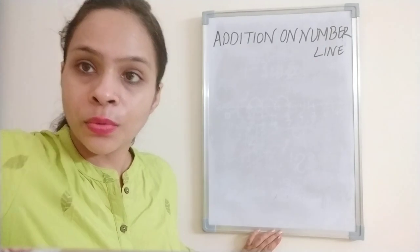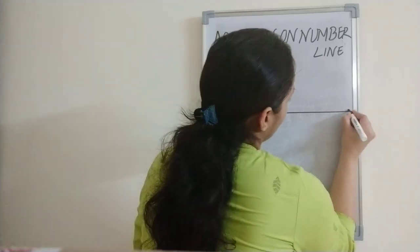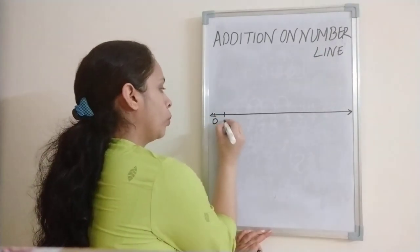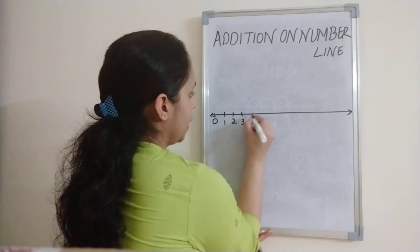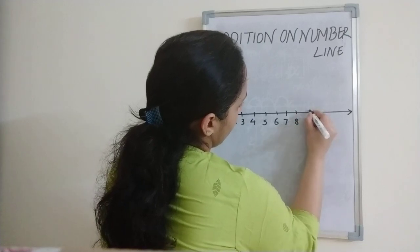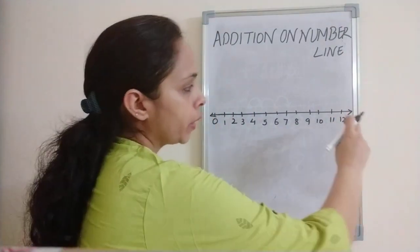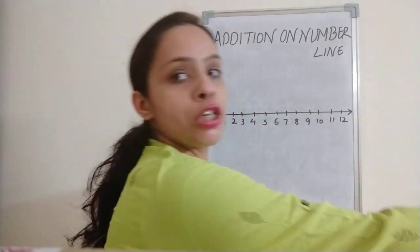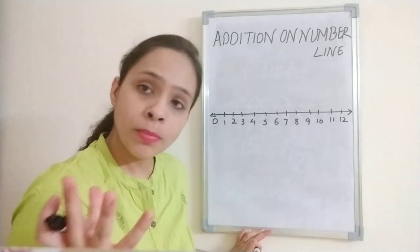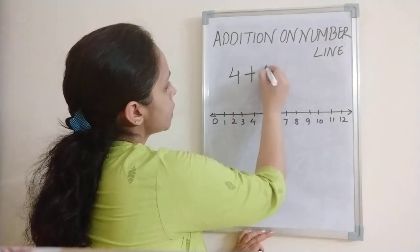For the number line, what is most important? First we will draw the number line. Which number will the number line start from? It will start from number zero. One, two, three, four, five, six, seven, eight, nine, ten, eleven and so on. Ma'am hasn't put an arrow — that means the number line can continue, it can go further ahead.